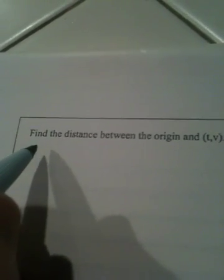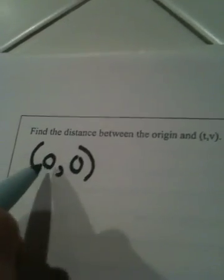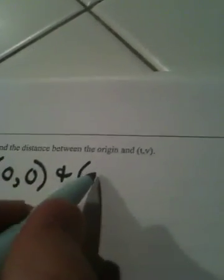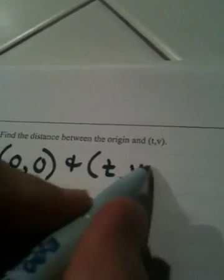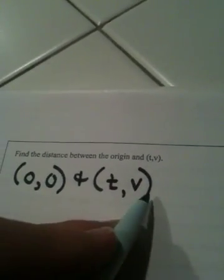Okay, origin. The origin, of course, is where the x-axis and the y-axis meet, and as an ordered pair that would be written as 0, 0. And t,v, there's no specific location because we don't know what those variables represent. So we just call it 0, 0 and t,v.